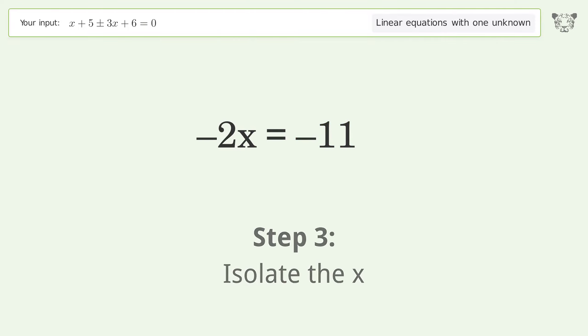Isolate the x. Divide both sides by negative 2. Cancel out the negatives.